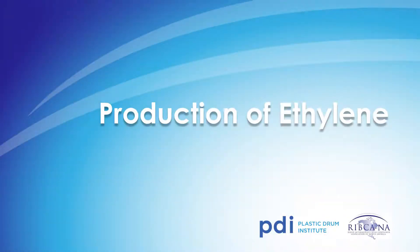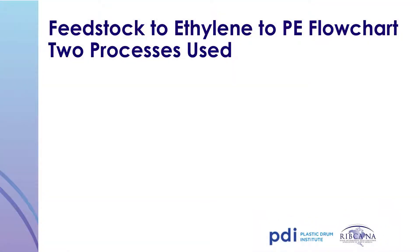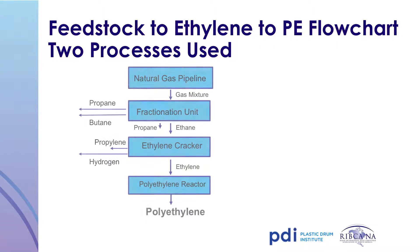How is ethylene produced? There are two main methods. The first uses a natural gas liquids feedstock, primarily used in North America due to the abundant supply of natural gas. Natural gas is fractionated to remove components such as butane and propane. The ethane portion is subjected to a cracking process which results in ethylene, which is then sent to a polyethylene reactor for polymerization and formation of the finished product, polyethylene.